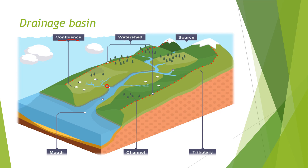Here is a watershed. Watershed is the edge of a highland surrounding a drainage basin, and it marks a boundary between two drainage basins. As you can see, it is marked by this red line, separating the two highland areas.